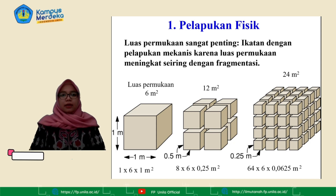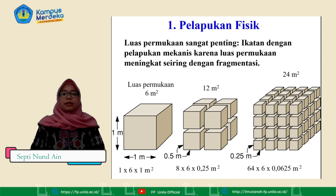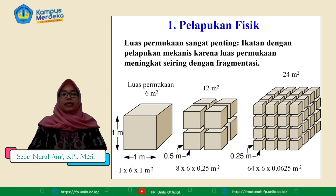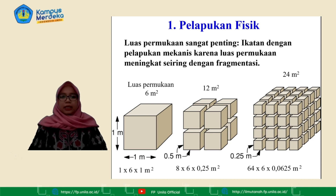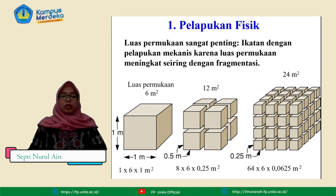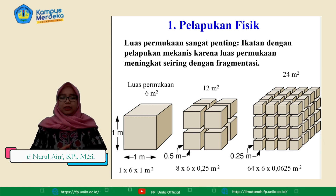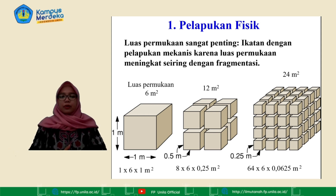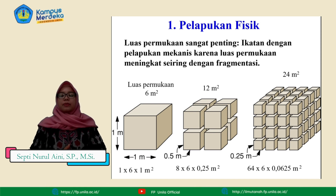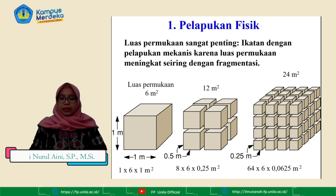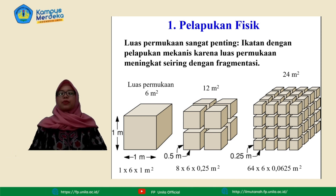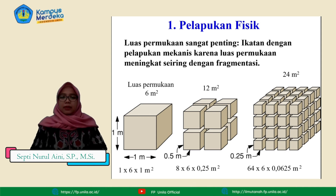Dalam pelapukan fisik, luas permukaan sangat penting karena ikatan dengan pelapukan mekanis, karena luas permukaan meningkat seiring dengan fragmentasi. Pada gambar pertama terlihat luas permukaannya hanya 6 meter persegi. Kemudian terfragmentasi sehingga luas permukaannya menjadi 12 meter persegi. Pada gambar ketiga mengalami fragmentasi lagi sehingga luas permukaannya menjadi 24 meter persegi. Artinya semakin kecil ukuran partikel maka luas permukaannya akan semakin besar.